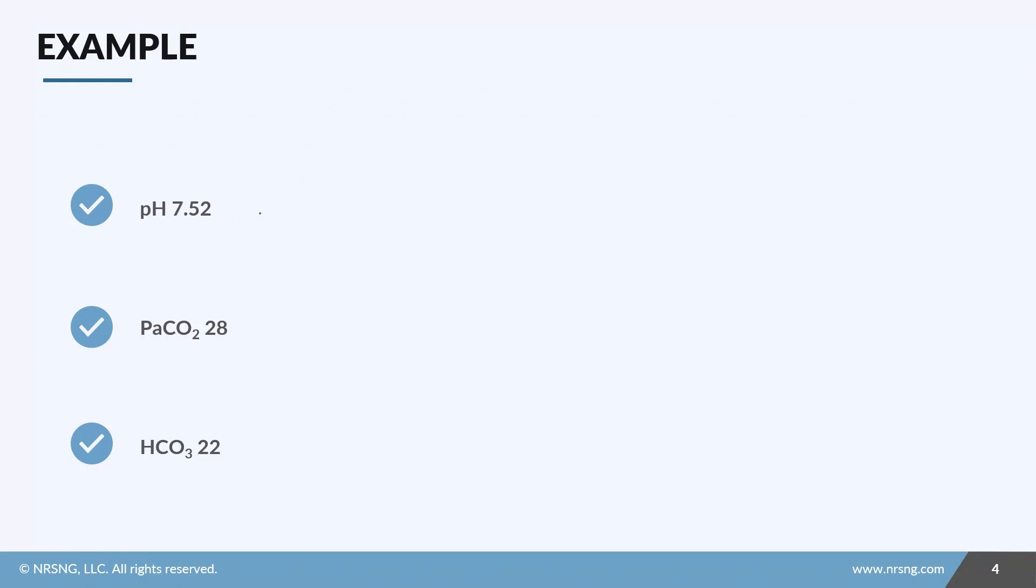pH of 7.52, that is high. PaCO2 of 28 is low, and a bicarb of 22 is normal. So we see these opposite arrows, right? Well, we know respiratory is opposite and that is CO2, so this is a respiratory issue. And since we know the pH is 7.52 which is alkalosis, we can say this is a respiratory alkalosis. Step three is compensation, but since the bicarb is normal we know there's no compensation happening.